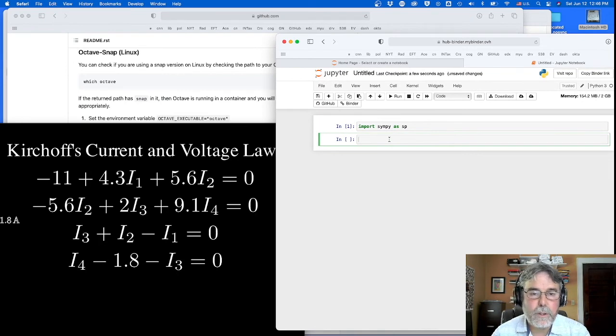So I'm going to call the first equation 1, 2, 3, and 4. So we've got four equations, equation 1, equation 2, equation 3, equation 4. So we're going to need four symbols. The symbols are going to be I1, I2, I3, and I4.